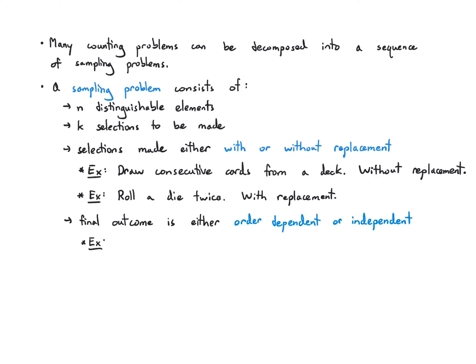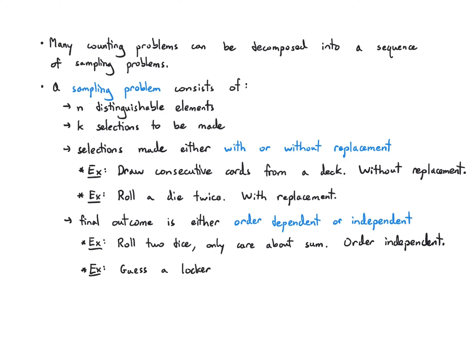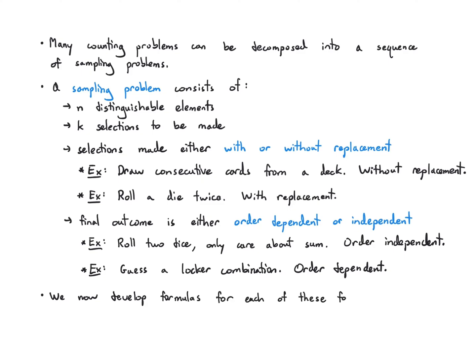The final outcome is either order dependent or independent. For example, if you roll two dice but only care about the sum, this is order independent because you don't care if you got three then four, or four then three — they both add up to seven. But if you're trying to guess a locker combination, order matters: if you try 3, 4, 11 but the combination was 11, 4, 3, you'll get it wrong. We're just going to review formulas for each of these four configurations without deriving them.